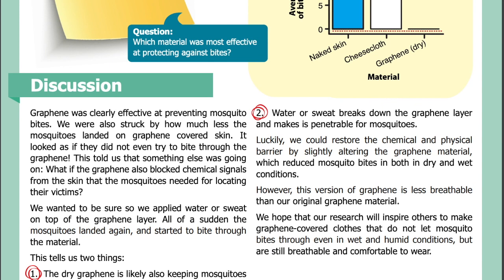Discussion: Graphene was clearly effective at preventing mosquito bites. We were also struck by how much less often mosquitoes landed on graphene-covered skin — it looked as if they did not even try to bite through the graphene. This told us that something else was going on. What if the graphene also blocked chemical signals from the skin that the mosquitoes needed for locating their victims? We wanted to be sure, so we applied water or sweat on top of the graphene layer. All of a sudden, the mosquitoes landed again and started to bite through the material. This tells us two things: one, dry graphene is likely also keeping mosquitoes off by keeping necessary chemical cues from reaching the mosquito; two, water or sweat breaks down the graphene layer and makes it penetrable for mosquitoes. Luckily, we could restore the chemical and physical barrier by slightly altering the graphene material, which reduced mosquito bites in both dry and wet conditions.